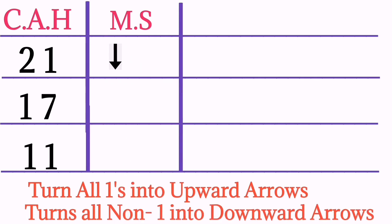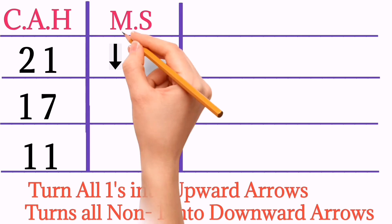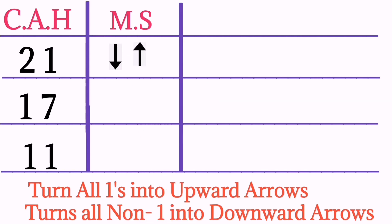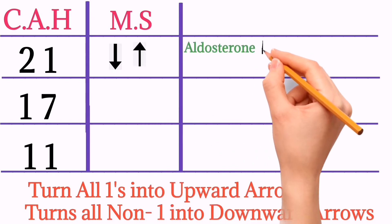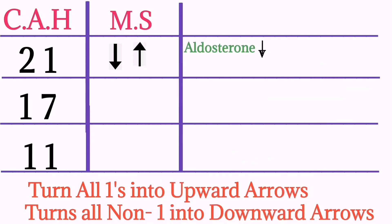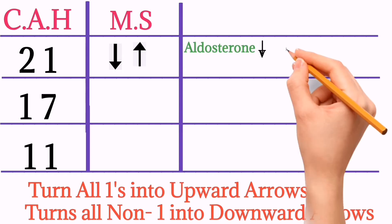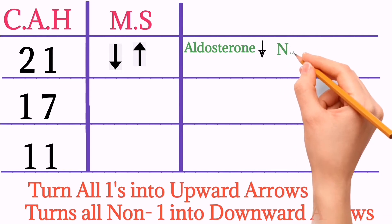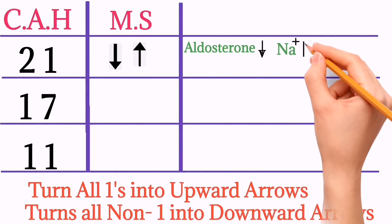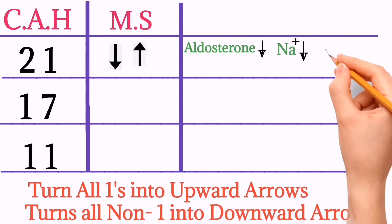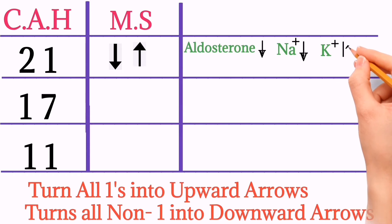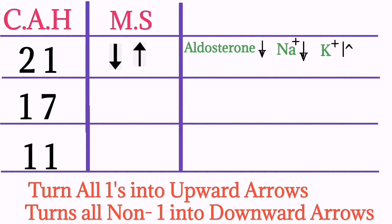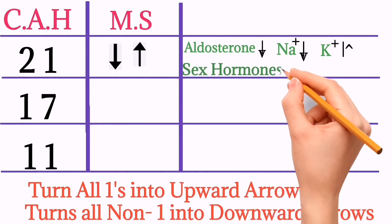In 21-hydroxylase deficiency: 2 is non-one so it's a downward arrow, and 1 is an upward arrow. So mineralocorticoid — that is aldosterone — will decrease, which causes sodium to decrease, potassium to increase, and leads to hypotension. Sex hormones will be increased, which leads to virilization.